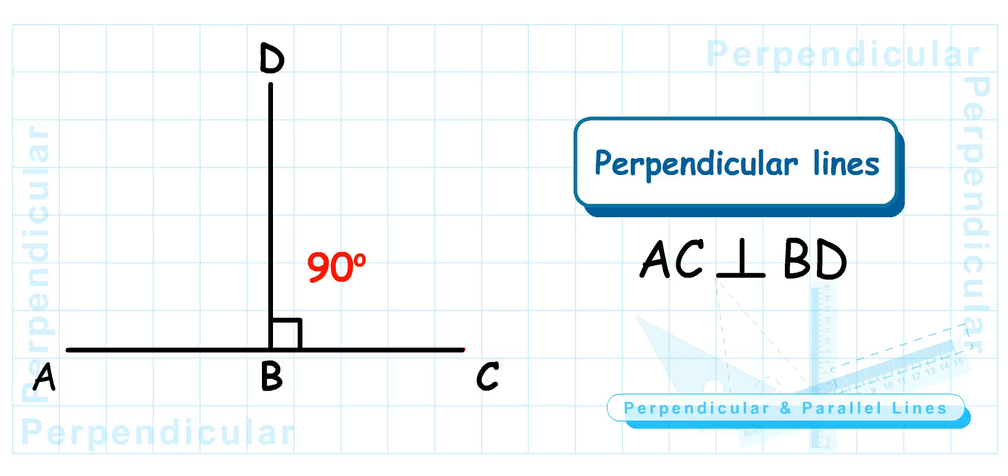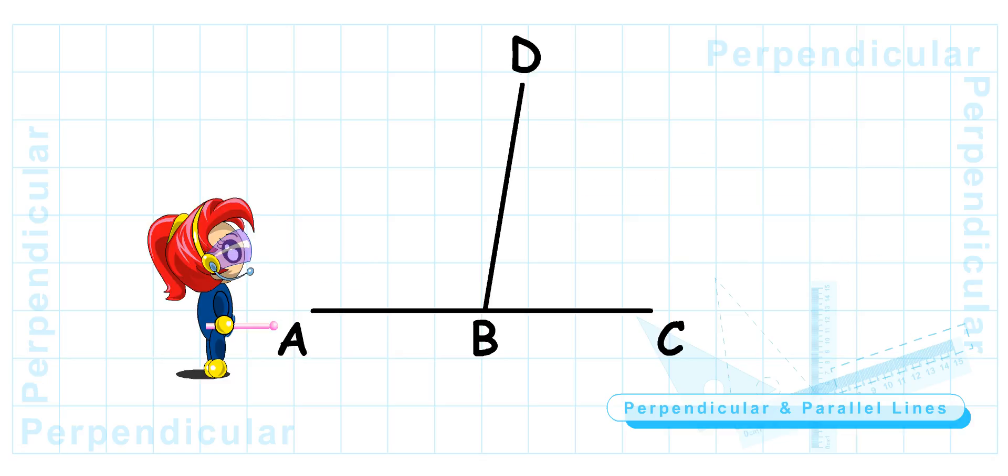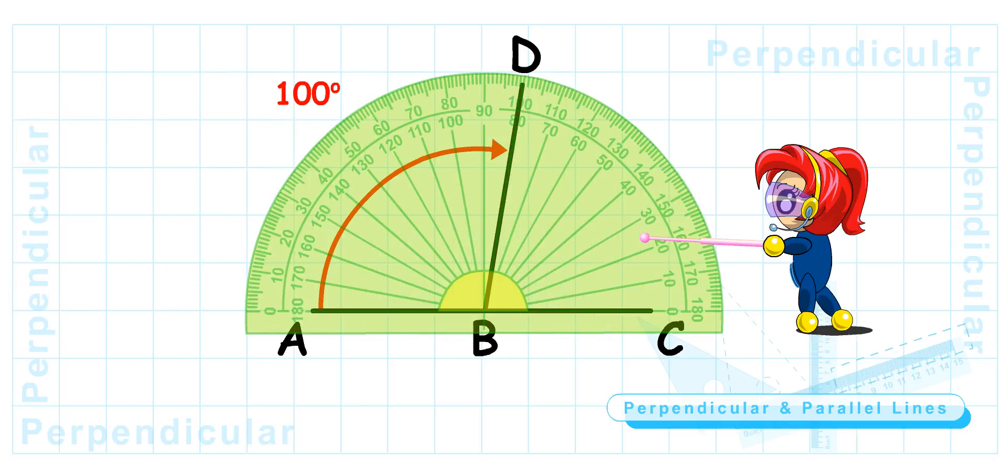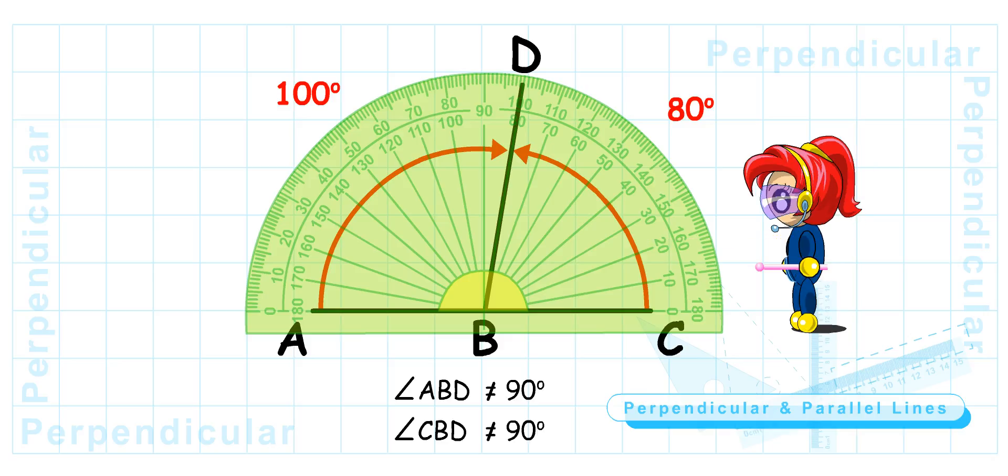I see, teacher. Turbo Girl, are these perpendicular lines? No, teacher. Neither angle ABD nor angle CBD is equal to 90 degrees. Good.